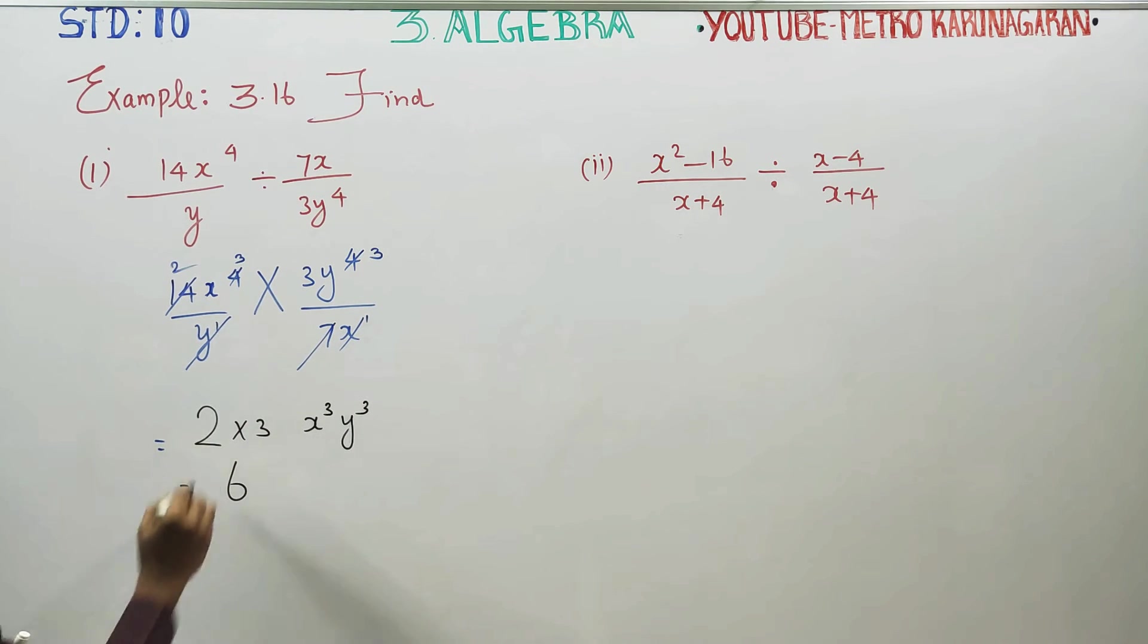2 times 3 is 6. x cube y cube. Variables and numbers multiply - this is your final answer.